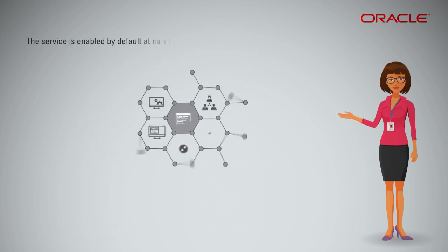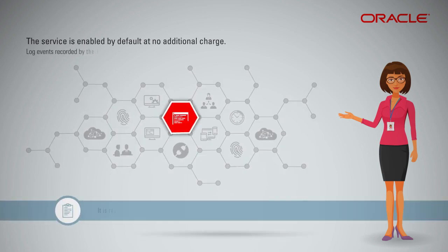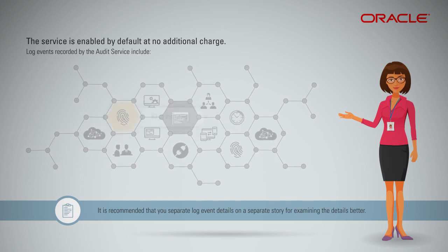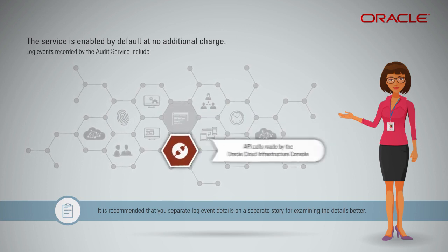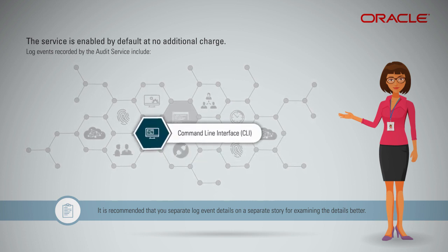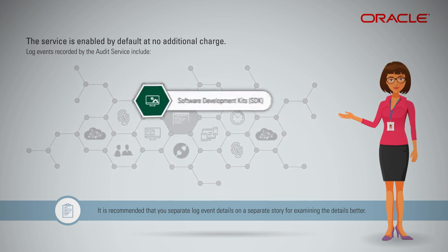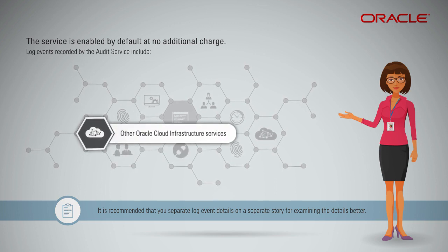The service is enabled by default at no additional charge. Log events recorded by the audit service include ID of the caller, target resource, time of the recorded event, request and response parameters, API calls made by the Oracle Cloud Infrastructure Console, command line interface or CLI, software development kits or SDK, custom clients, and other Oracle Cloud Infrastructure Services.